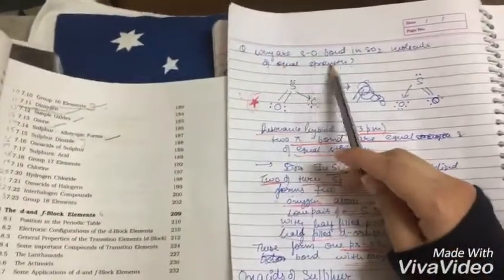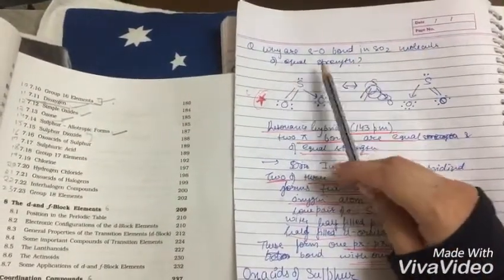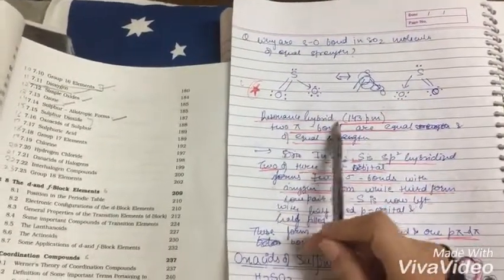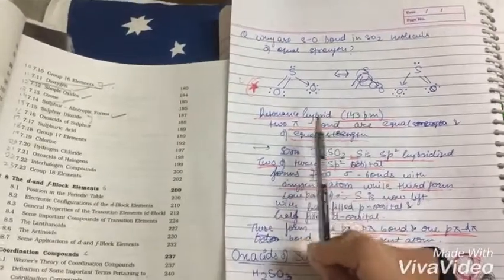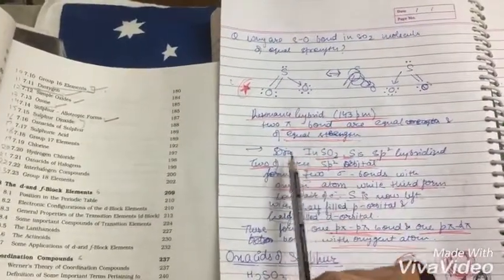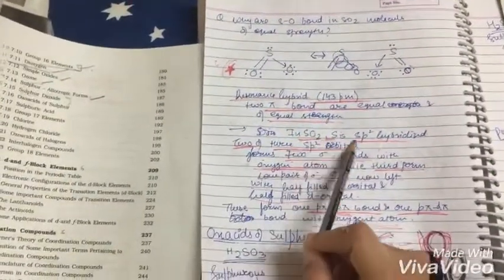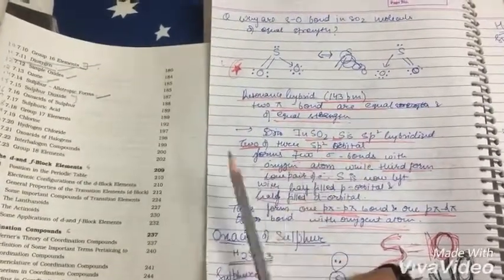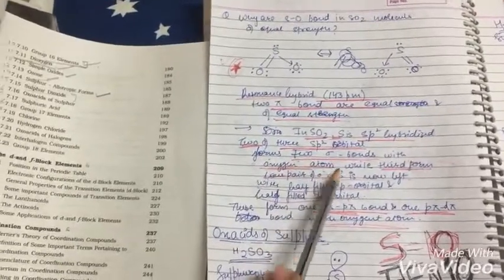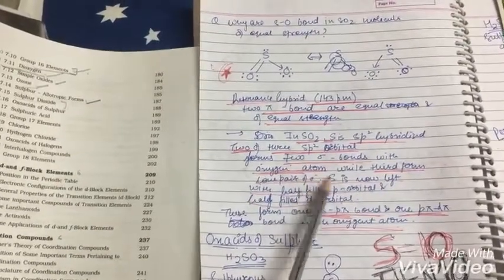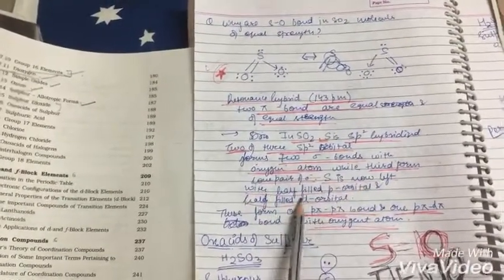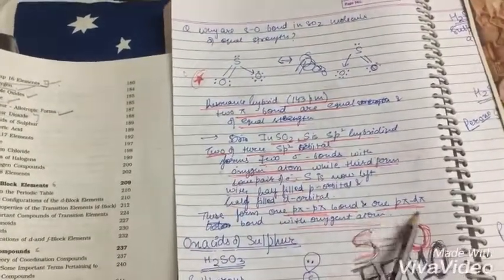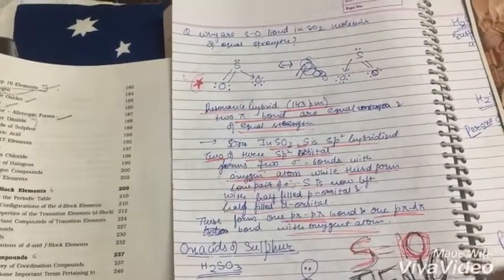Again, why are SO bonds in SO2 molecule of equal strength? Both are resonating hybrids at 143 pm. Make both diagrams - pi bonds are equal and of equal strength. In SO2, S is SP2 hybridized. Two of the three SP2 orbitals form two bonds with oxygen atoms, while the third forms lone pair of electrons. S is now left with a half-filled p orbital and half-filled d orbital. These form one P pi-P pi bond and one P pi-D pi bond with oxygen atom. That's it.